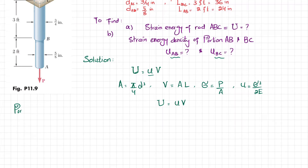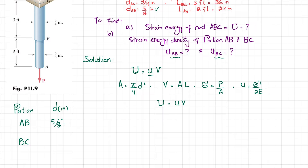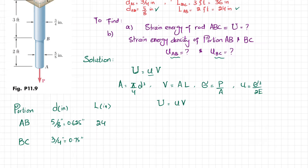Setting up the table with portions AB and BC. The diameter of rod AB is 5/8 inch, which equals 0.625 inch. The diameter of rod BC is 3/4 inch, which equals 0.75 inch. The length of AB is 24 inches and the length of BC is 36 inches.